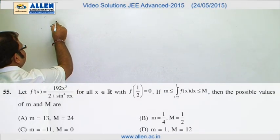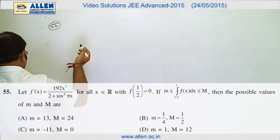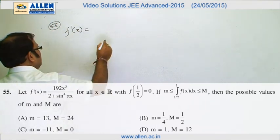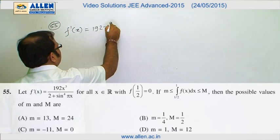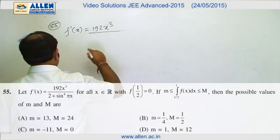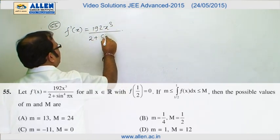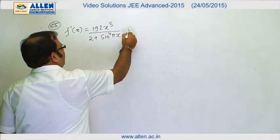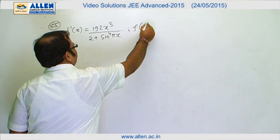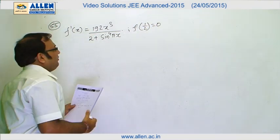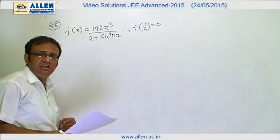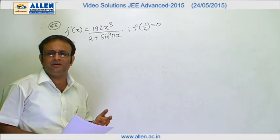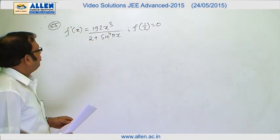In question 55, we are provided with f'(x) = 192x³ / (2 + sin⁴(πx)), along with the information that f(1/2) = 0, and we have to estimate the integration of f(x) from 1/2 to 1.